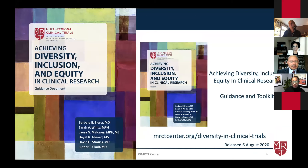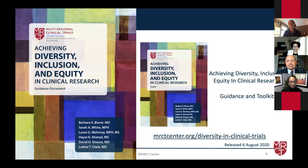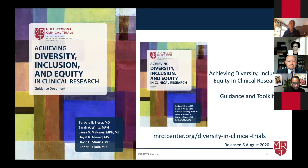In August of 2020, the MRCT Center released version one of Achieving Diversity, Inclusion, and Equity in Clinical Research. This is a comprehensive guidance document and toolkit that was the culmination of a three-year project to tackle diversity in clinical research from an ethical, scientific, and practical standpoint. The guidance and toolkit, which is almost 500 pages, presents the case for diversity and then walks through various aspects of clinical research, recognizing barriers and offering recommendations and tools along the way. This Leaning In series is really meant to dive into select sections of the guidance document.